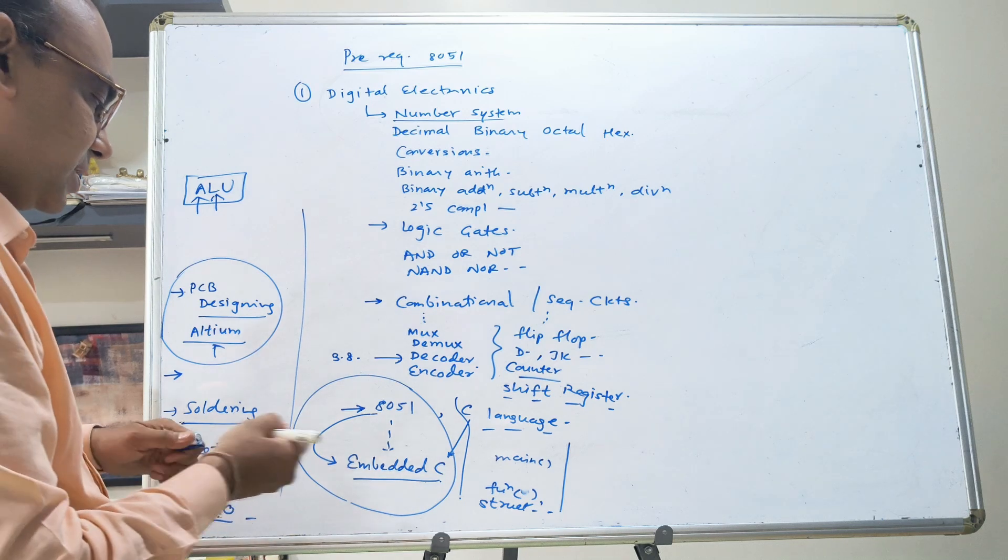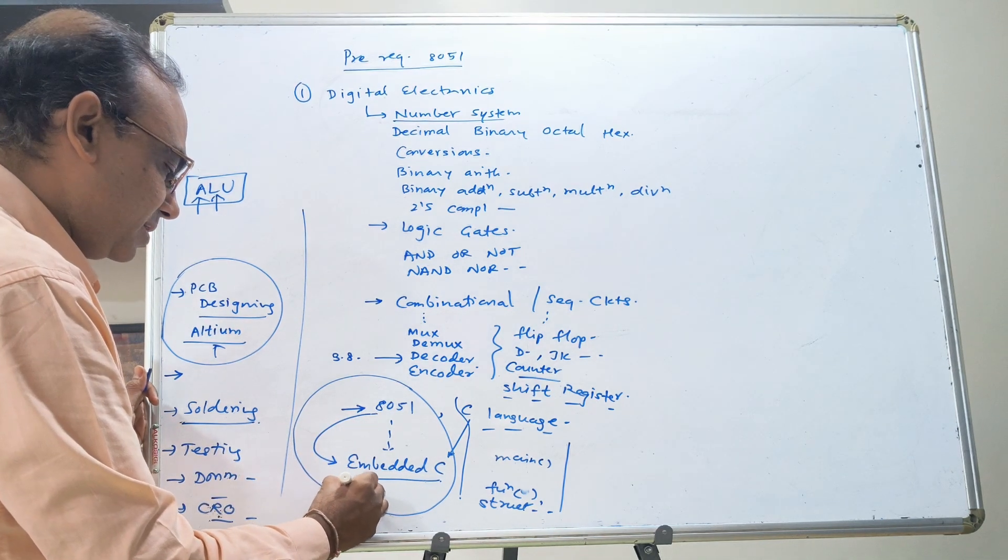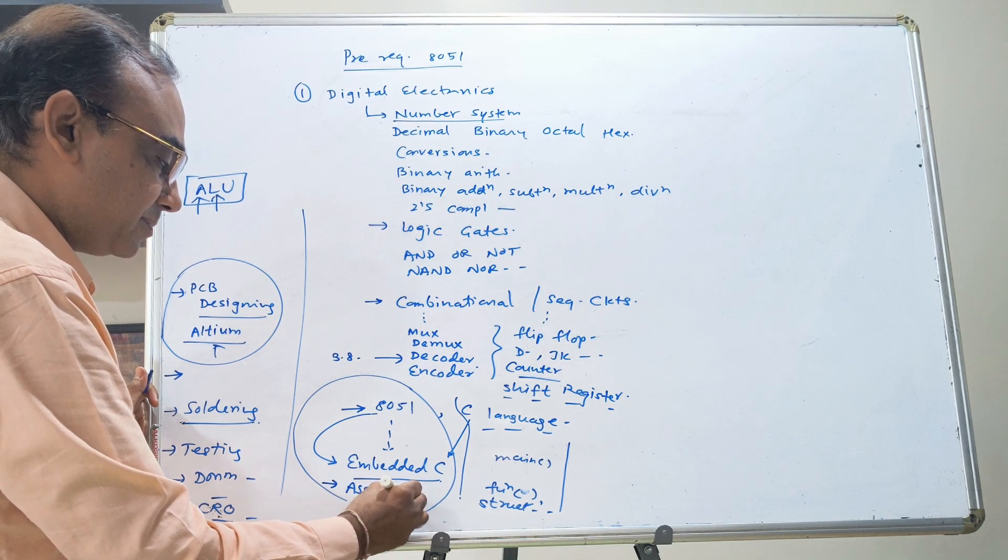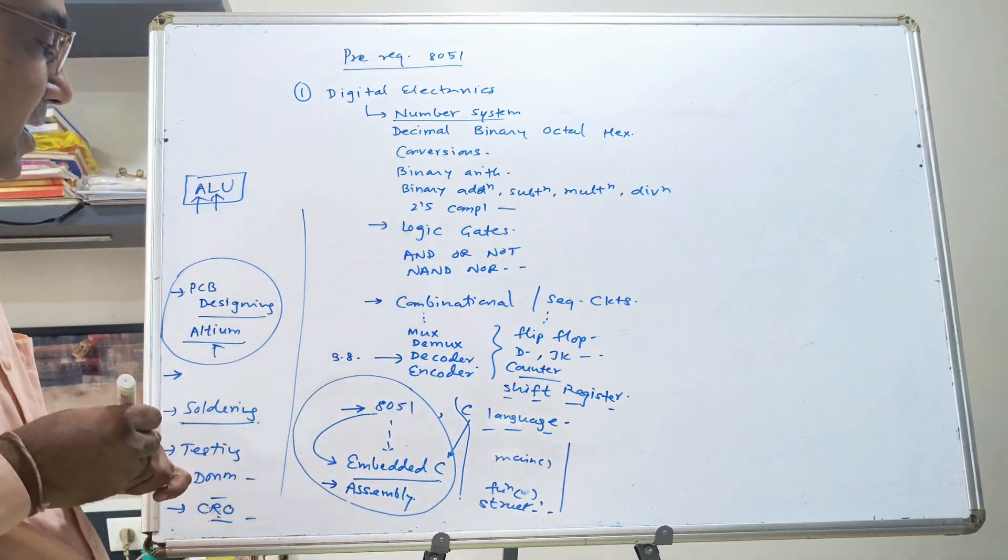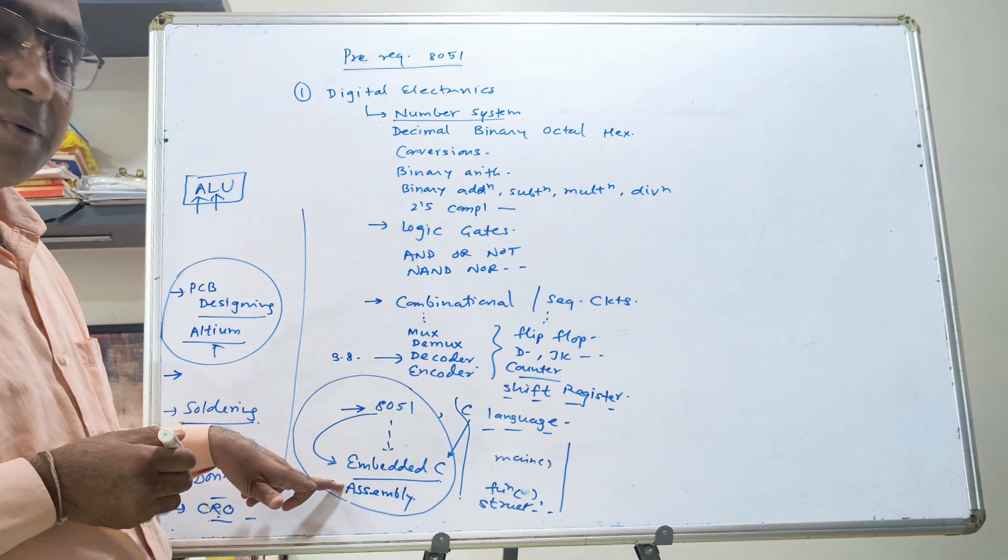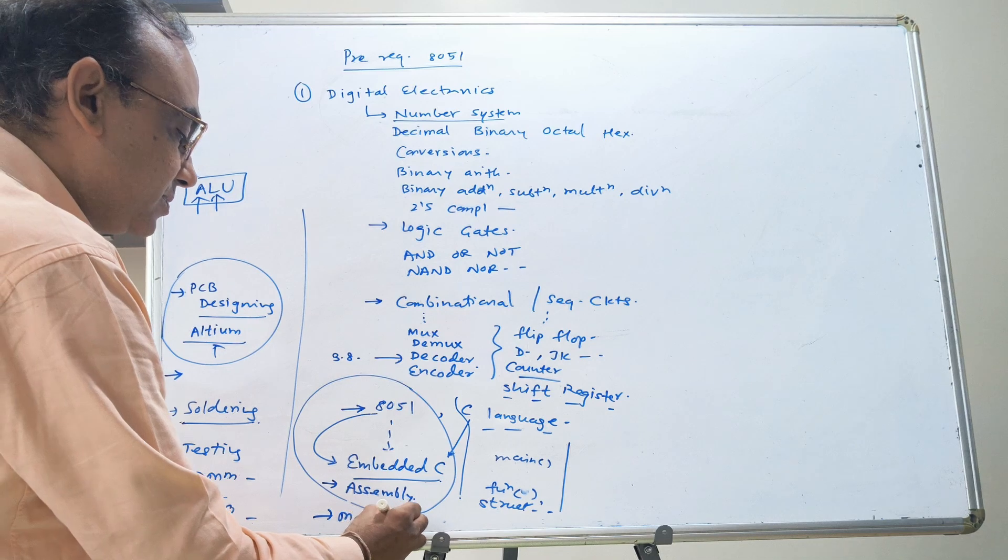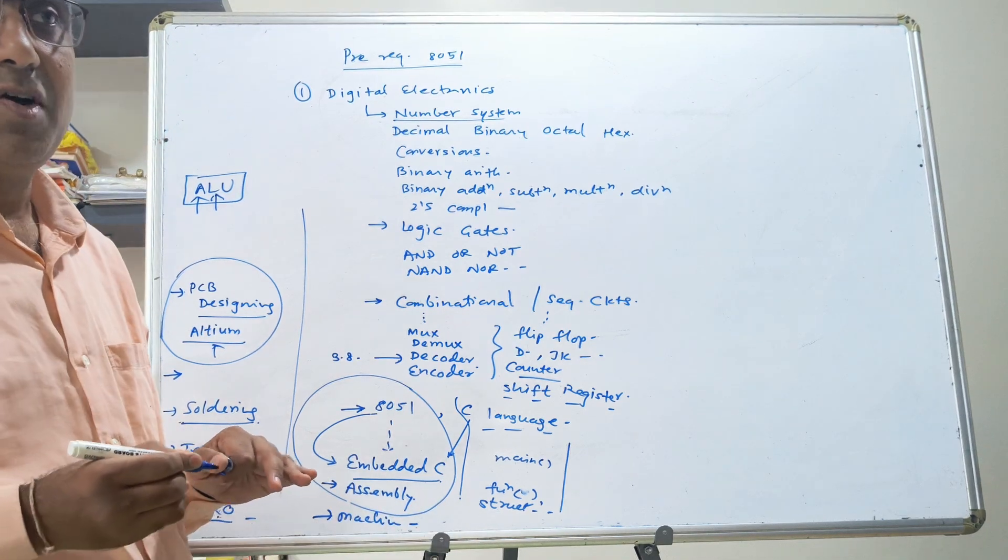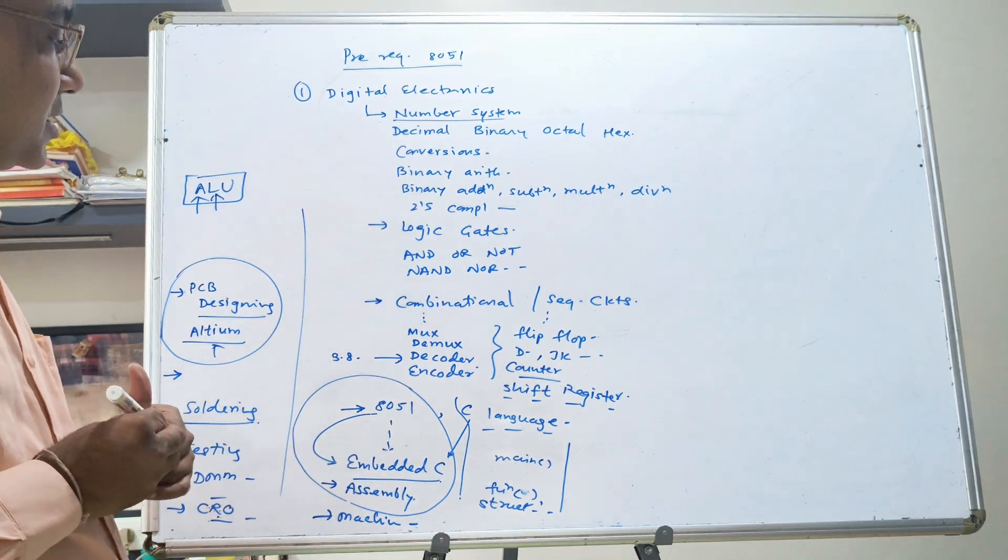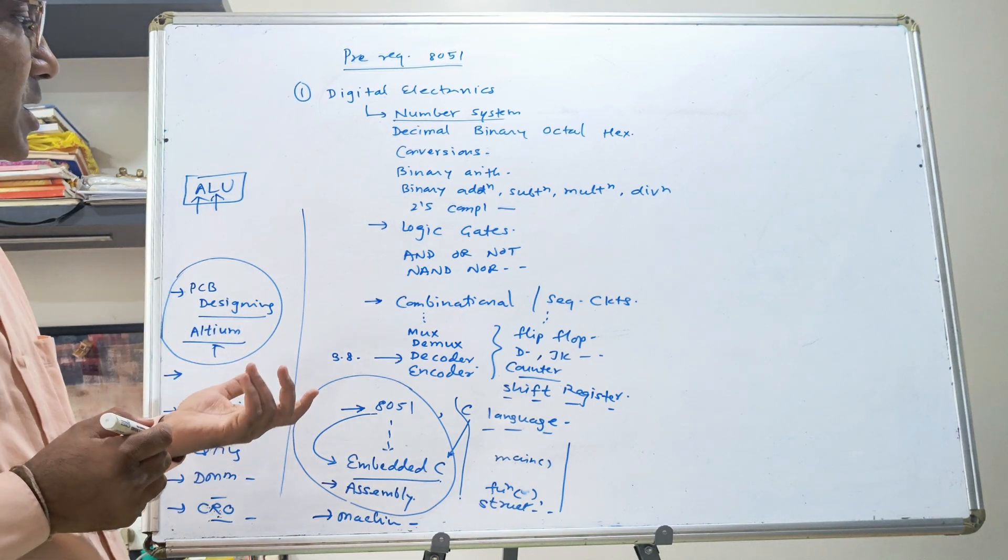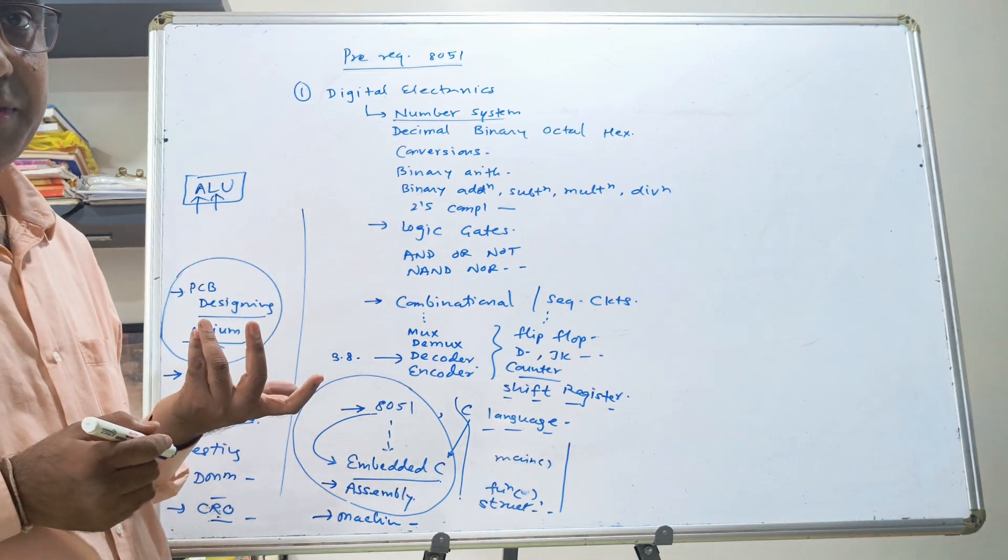Of course, I will go and write a program in assembly language as well. Ultimately your embedded C program will be converted to assembly. And finally, it will be converted to machine language, the language of ones and zeros, which is understood by your 8051 control unit.